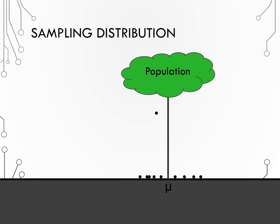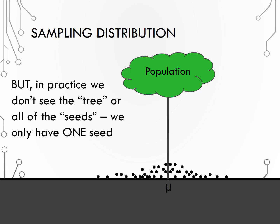If we were able to draw hundreds of samples and plot the mean from each of them, we know the sampling distribution would be centered around the population mean, and we could calculate the standard deviation of the statistics from all of our different samples. But in real life, we don't know mu, we don't see the whole population, nor do we actually collect all of these samples. We only have one sample, and one seed.